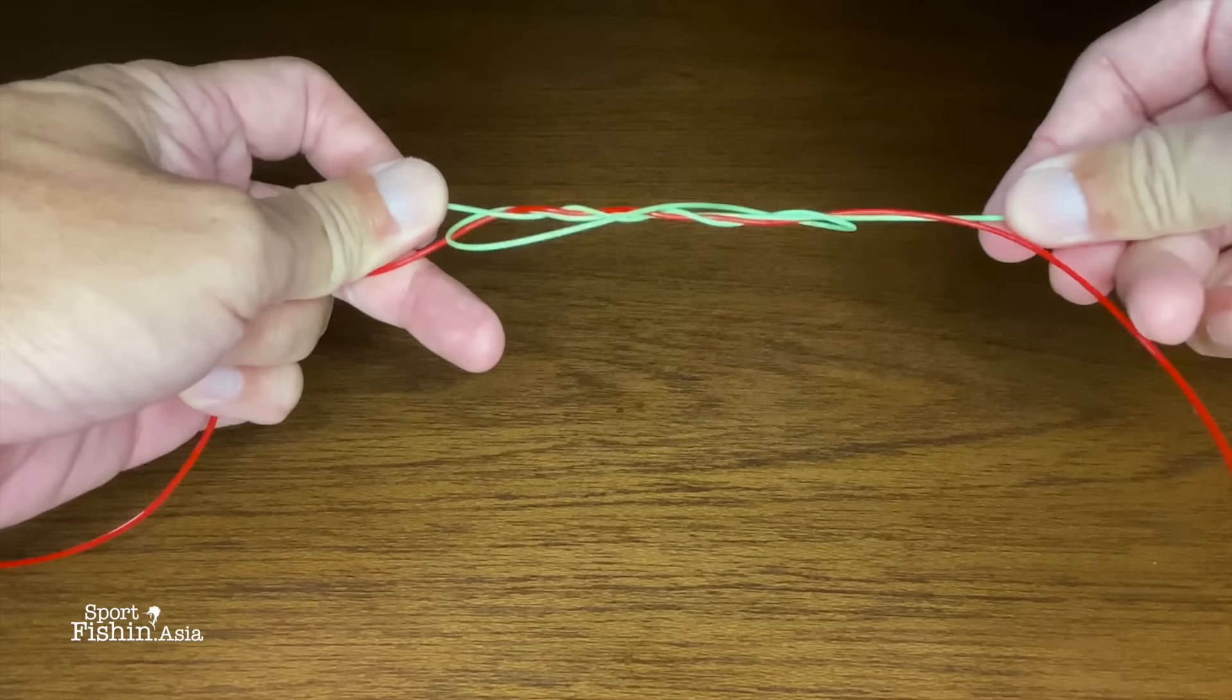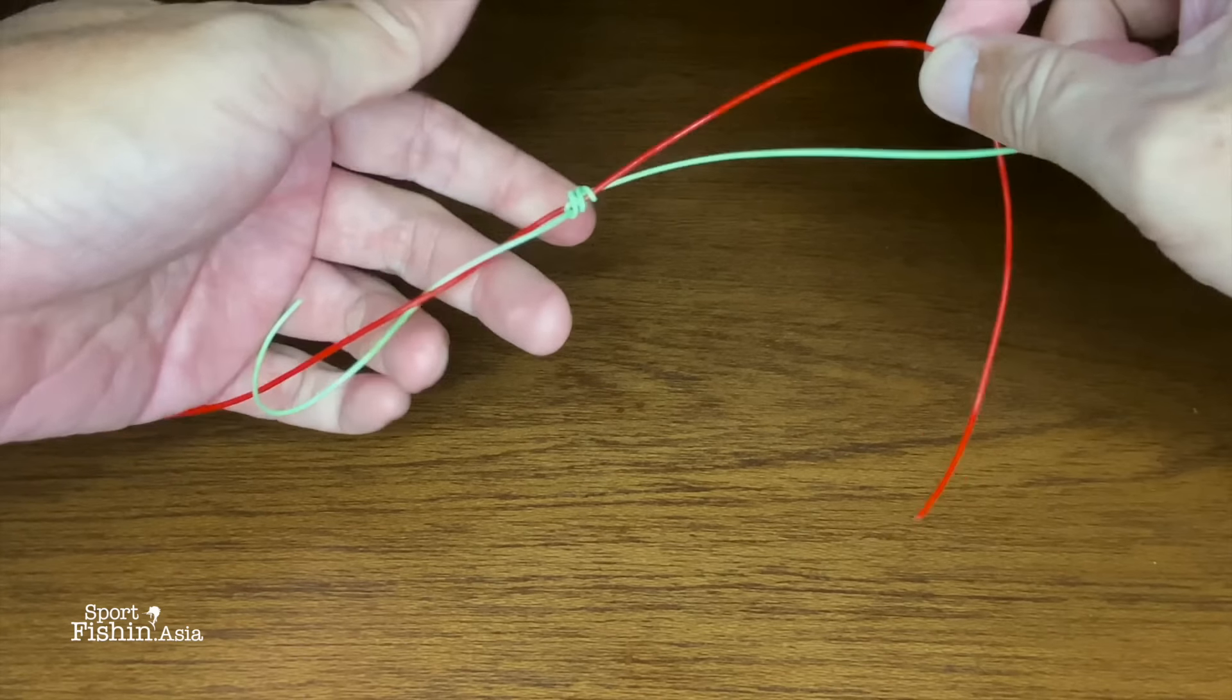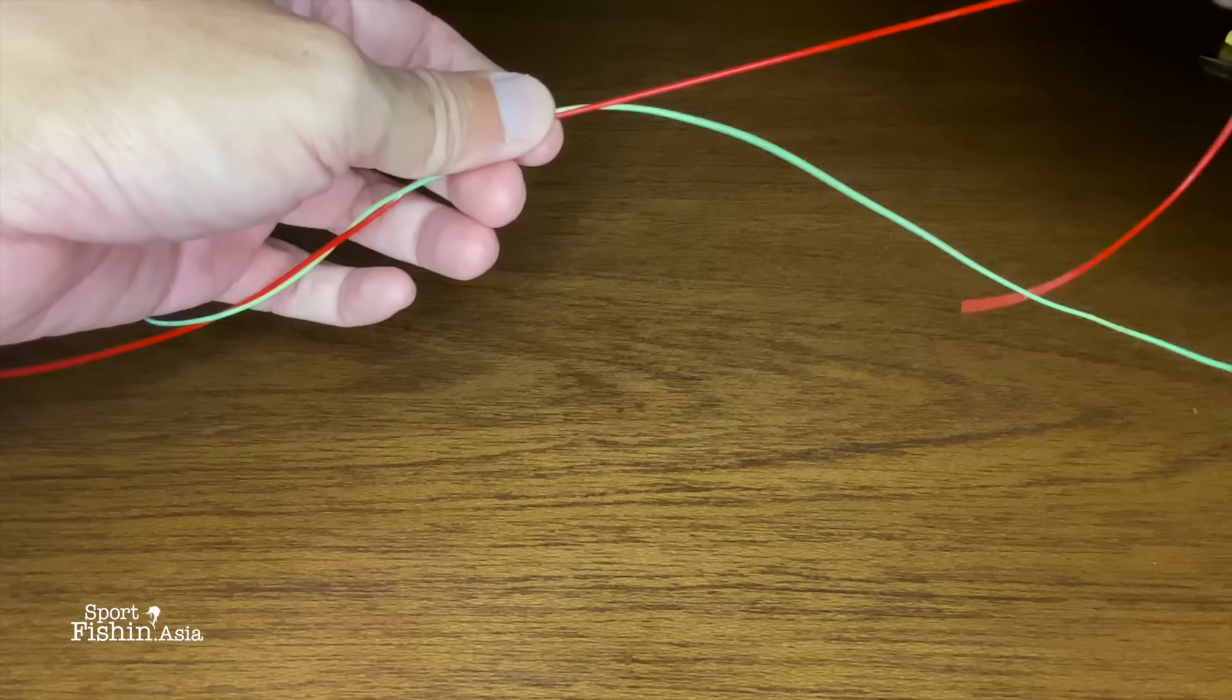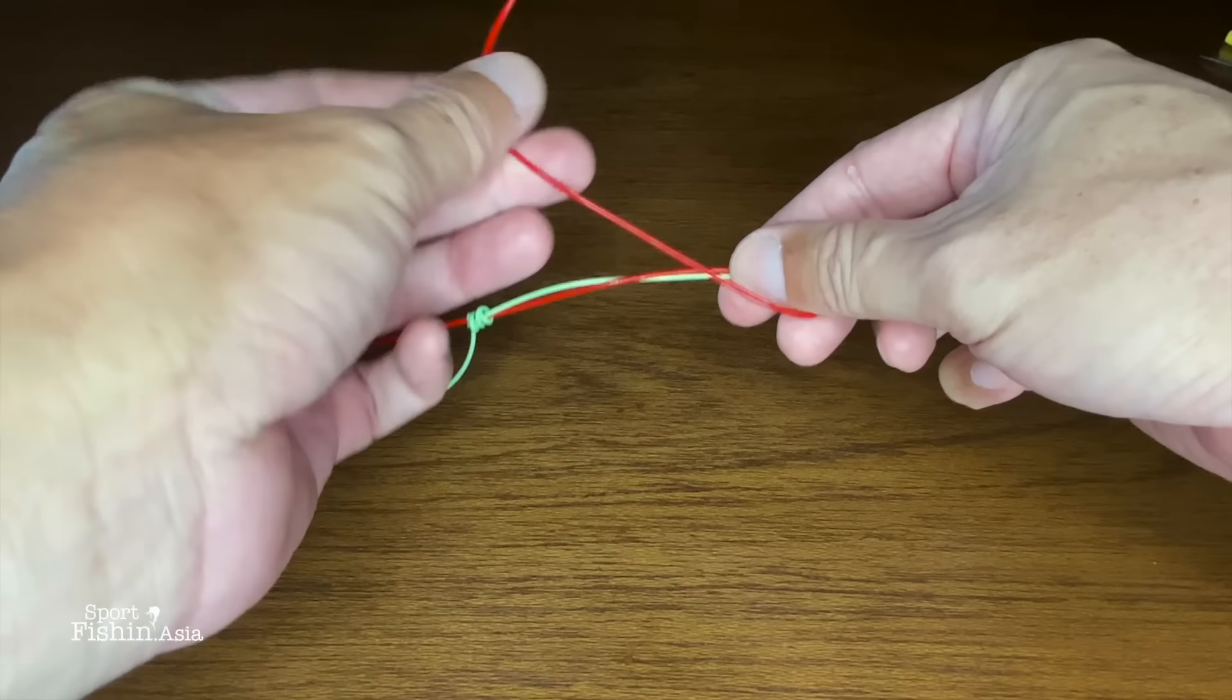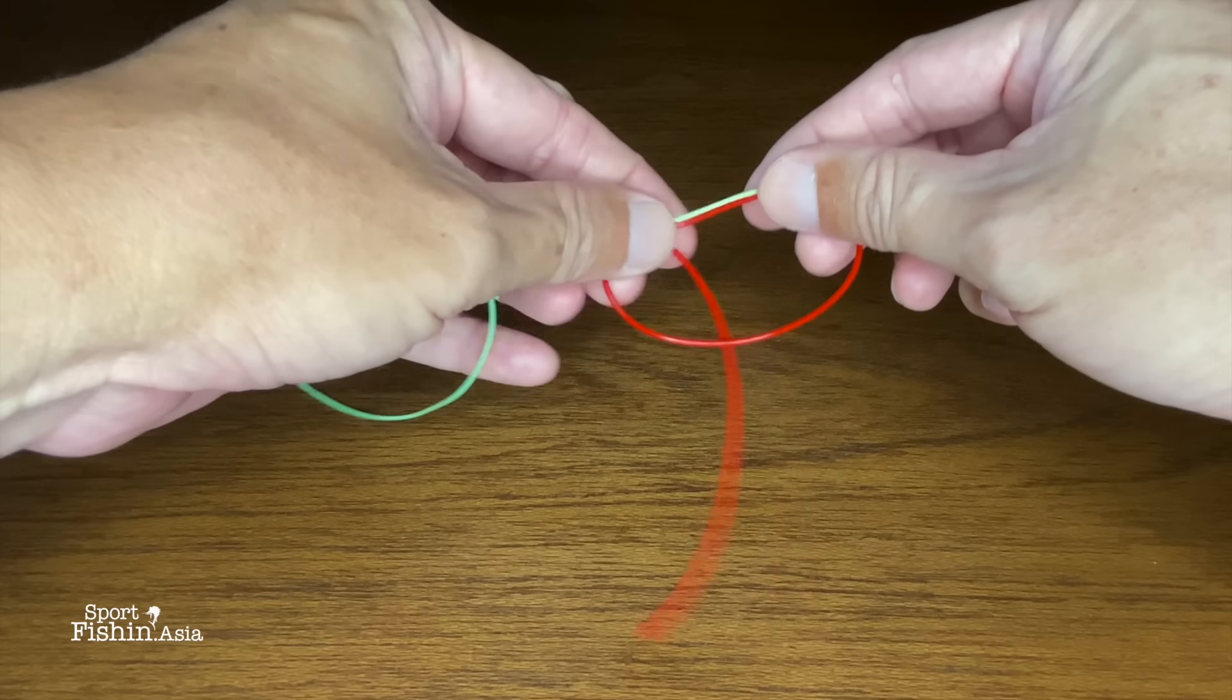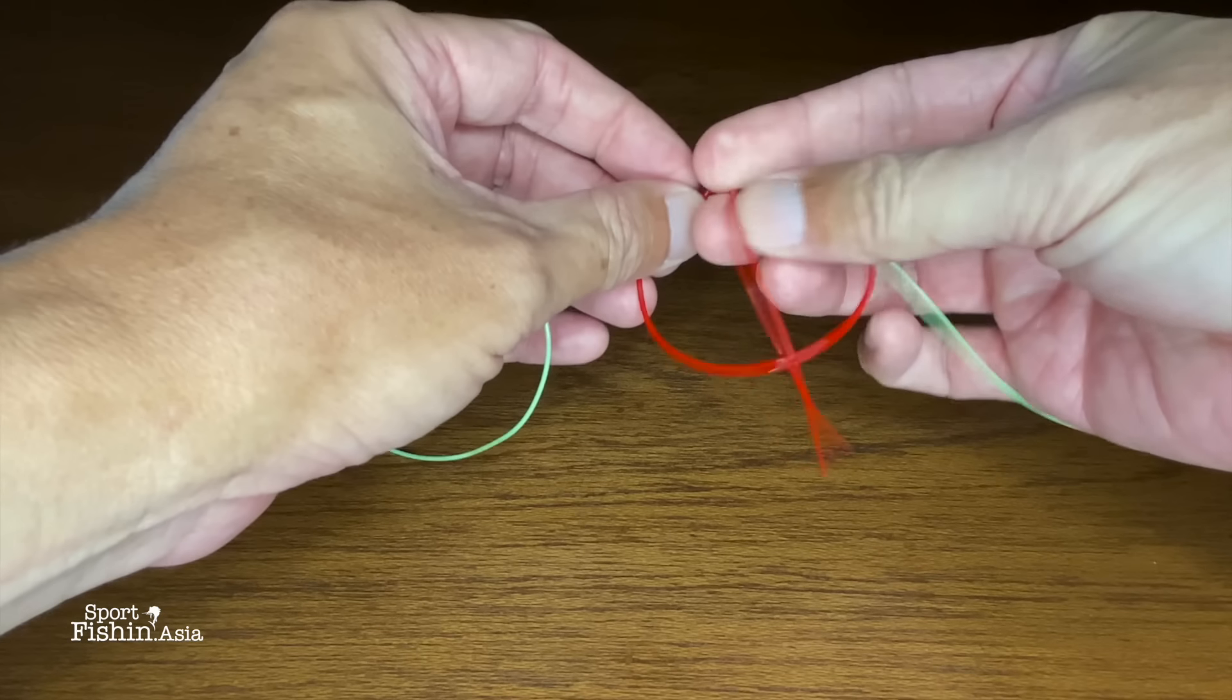Once you've done that, pull it tight but not very tight, and then go to the other end. Same thing—make a loop over both lines, then go through the loop and wrap around both lines.